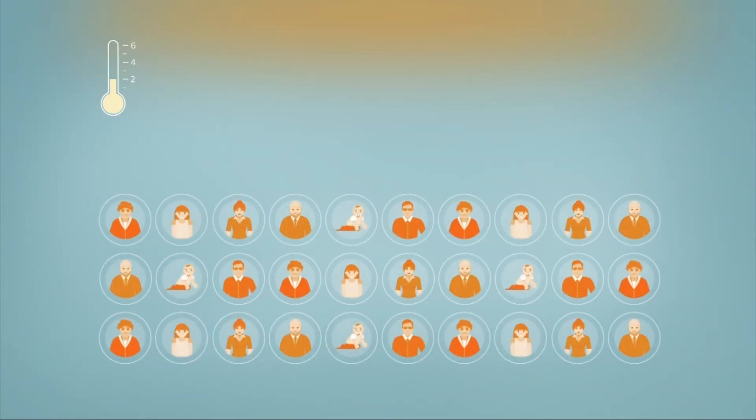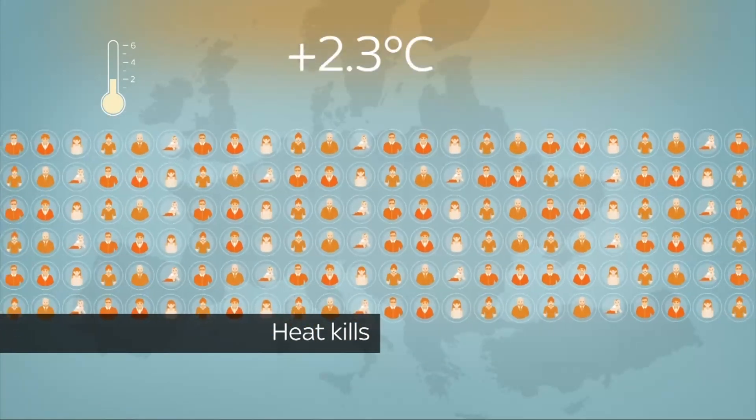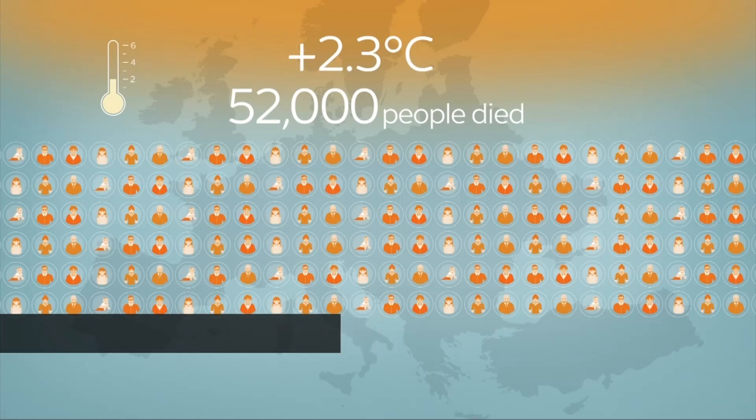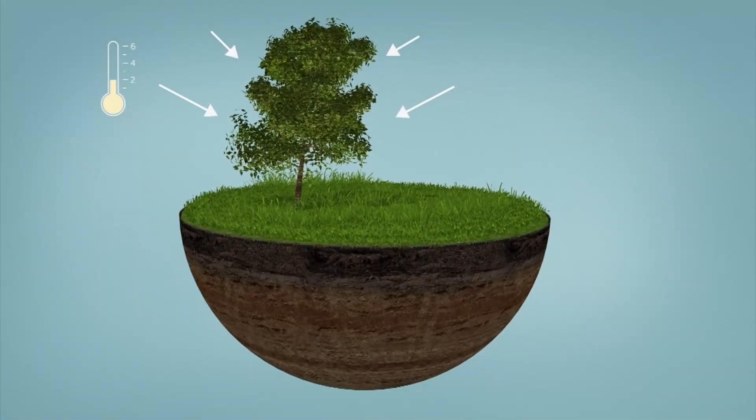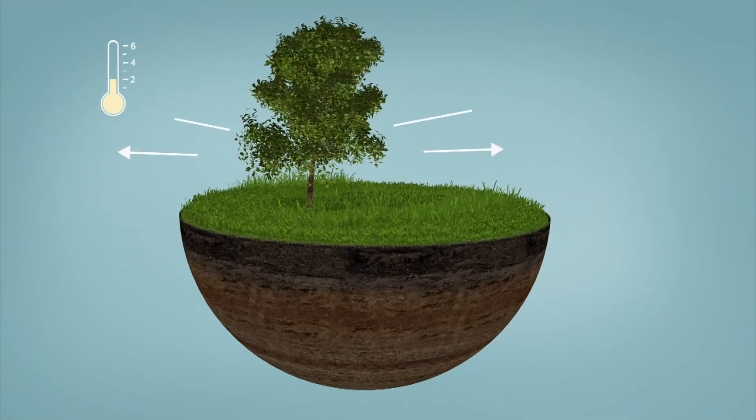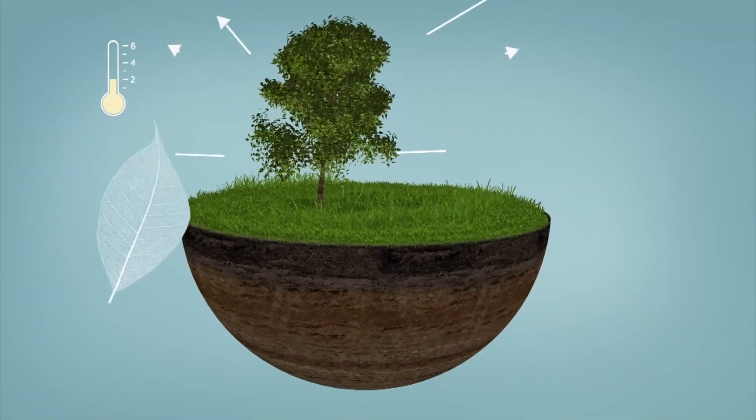At a two-degree rise, people begin to die in what are now considered normal summers. In 2003, with temperatures 2.3 degrees above average, 52,000 people died across Europe. Plant growth slows down, then stops. Plants don't absorb carbon dioxide as efficiently, instead emitting it. The extra carbon sees global warming spiral out of control.